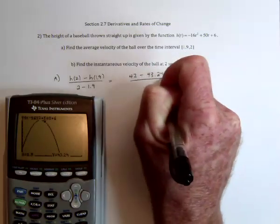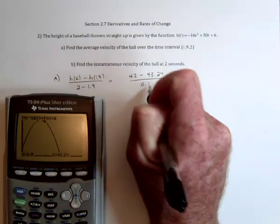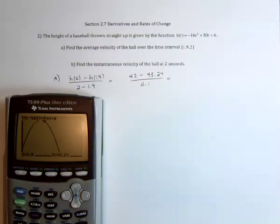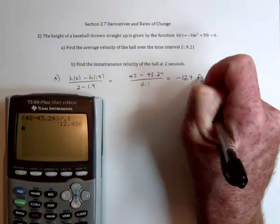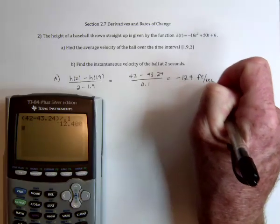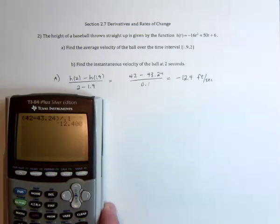So it's actually falling over that 0.1 seconds. And then if we subtract them, so 42 minus 43.24 divided by 0.1, negative 12.4, and it would be in feet per second. So it's dropping at about 12.4 feet per second.